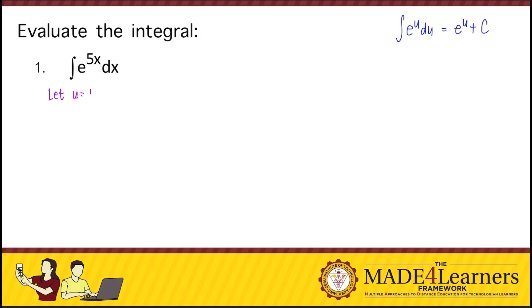We let u equal 5x, so du equals 5dx, and dx equals du over 5.